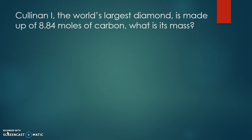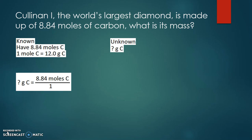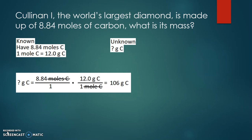Next we look at the world's largest diamond, Cullinan One, made up of 8.84 moles of carbon. What is its mass? We know we have 8.84 moles of carbon and we need to find the mass. What relates moles of carbon to grams is molar mass. Since it's just carbon, we take the atomic mass from the periodic table: 12. So one mole of carbon is 12 grams. Taking our given over one and using the conversion factor with one mole on the bottom and 12 grams on top, we can cancel out moles.